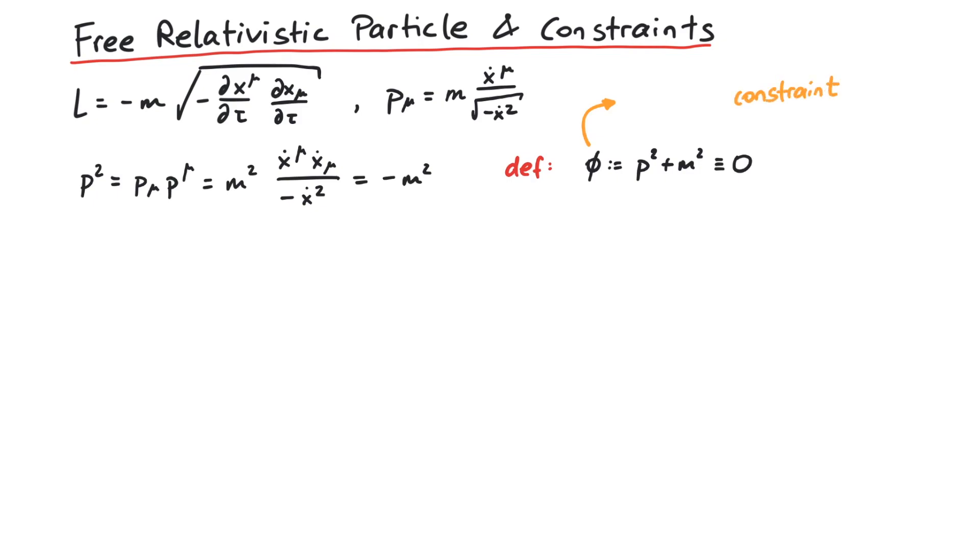More precisely, since we only use the definition of the conjugated momenta and did not use any equation of motion, it is a primary constraint.